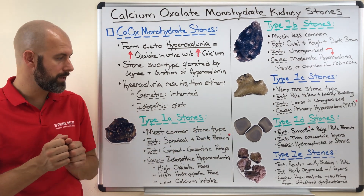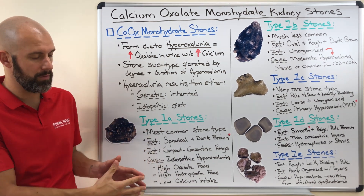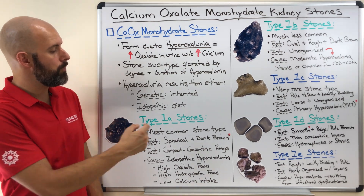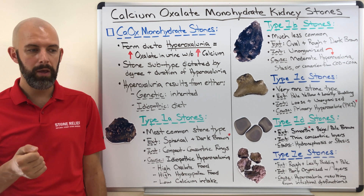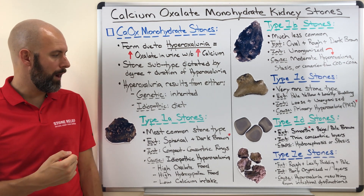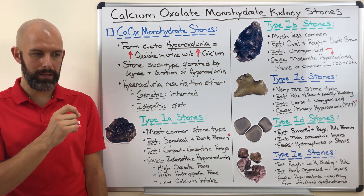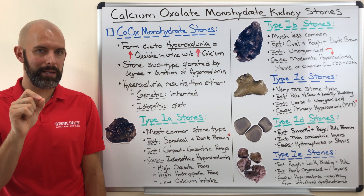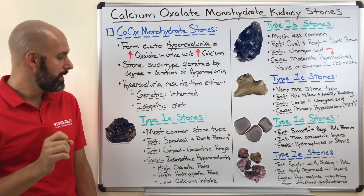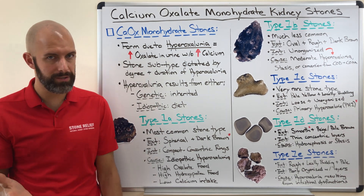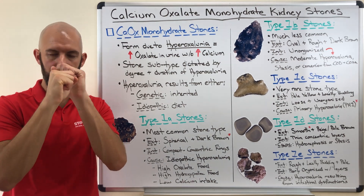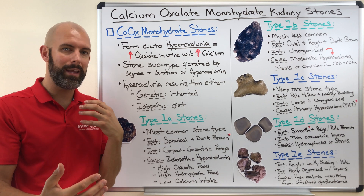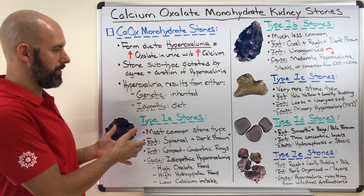That's not always going to be the case, because these stones form intermittently — there are times where they are active and times where they are dormant. If you were to pass a dark brown type 1A monohydrate stone, you would have passed it in its dormant phase. The other way you could pass these is with a light grayish layer, indicative of a stone in an active state. Internally, the type 1A stone spirals outward from the center much like a tree grows, which is indicative of that intermittent on-again off-again hyperoxaluria state.